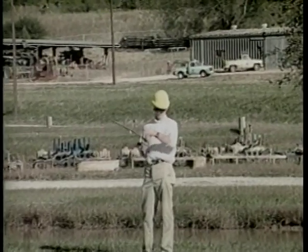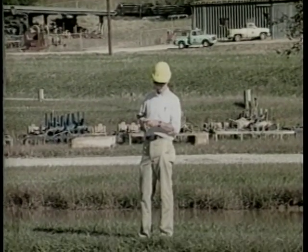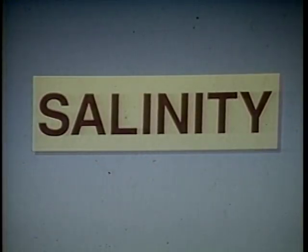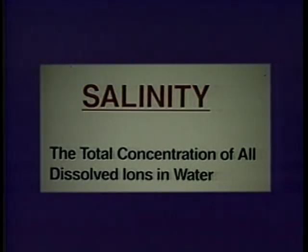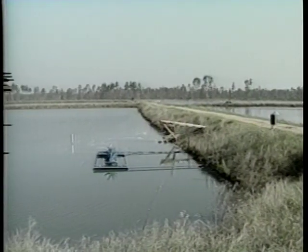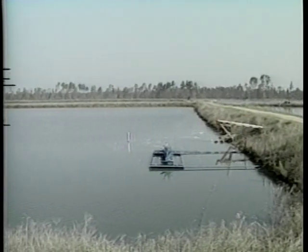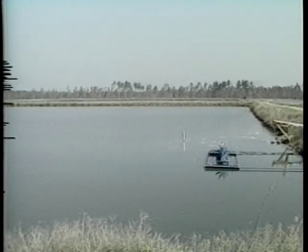However, the ion concentration of water in watershed ponds is usually very low. Salinity. In some coastal areas and in areas that have underground salt domes, the high salinity of water sources may prevent production of freshwater fish. The term salinity refers to the total concentration of all dissolved ions in water. If you are unsure about the salinity of your water source, contact your county extension agent.